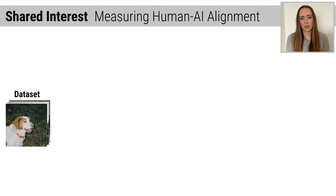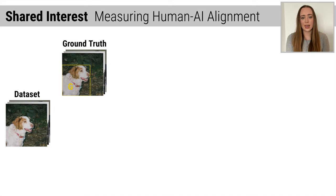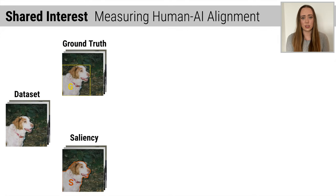In Shared Interest, we start with a dataset to analyze our model's behavior on. We quantify human decision-making via ground truth annotations, and we explain model decision-making via saliency. Here we use LIME applied to ImageNet images and their object-level bounding boxes. However, Shared Interest is agnostic to data modality and saliency method.